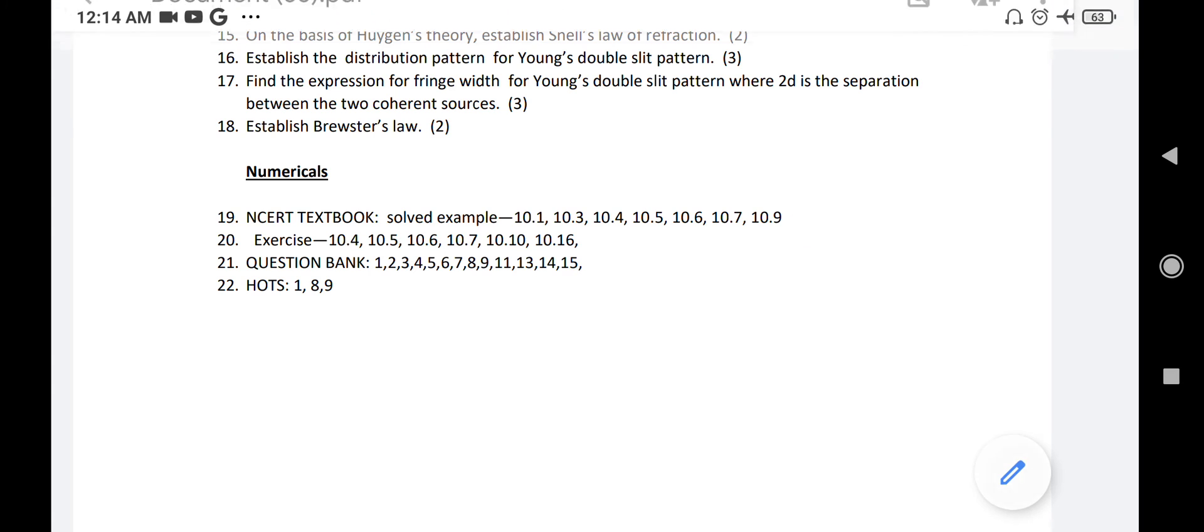Number 17: Find the expression for fringe width. Very important. That means beta equals lambda D by d. Question number 18: Establish Brewster's law. At polarizing angle, mu equals tan theta, where theta is the polarizing angle.